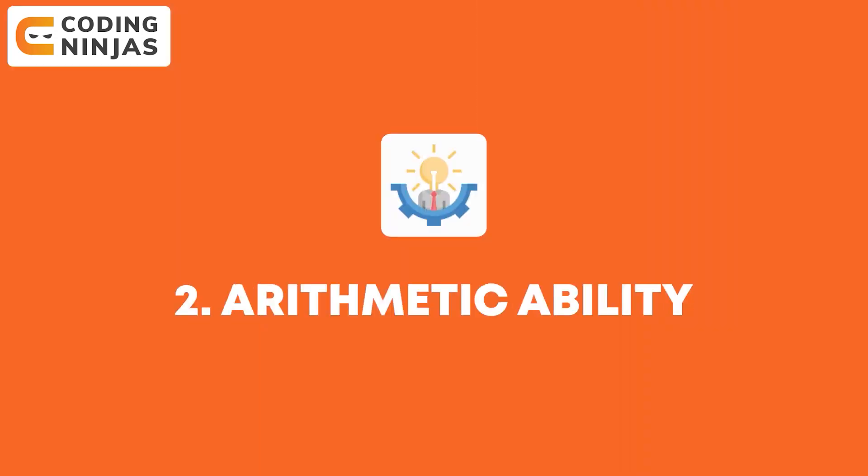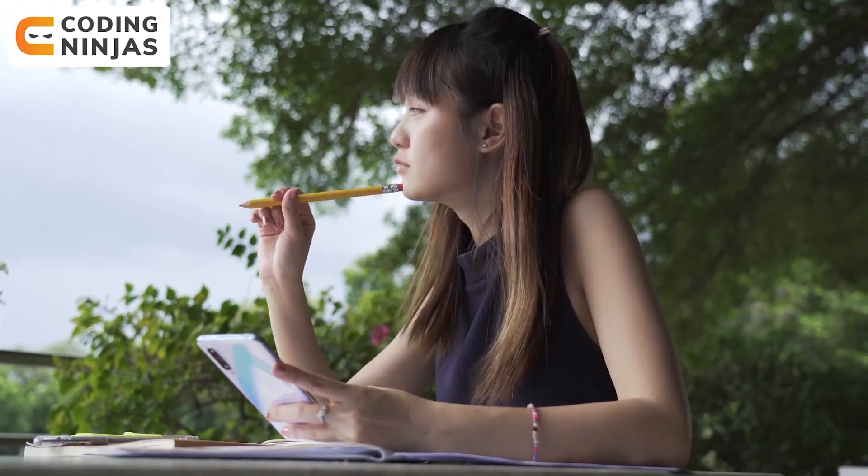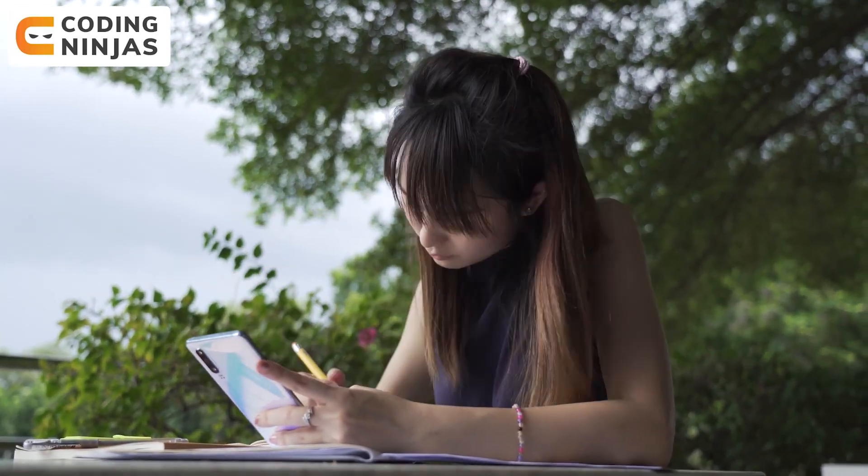Our second topic is arithmetic ability. In logical reasoning you use your brain directly, but in arithmetic ability you first have to learn some concepts because it is more about mathematics, and then solve the problems. Let's start with the topics in arithmetic ability.